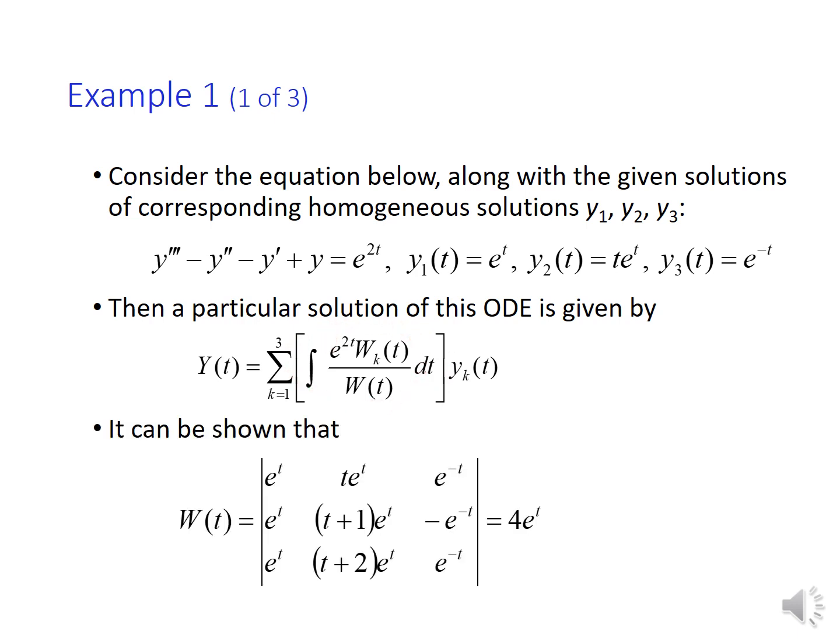One can show that the Wronskian of the fundamental solutions is equal to four times e to the t. Remember how we construct this Wronskian: it's a three by three determinant in which we first locate the fundamental set of solutions to the first row, then we write the first derivatives of these solutions to the second row, and then the second derivatives to the third row.